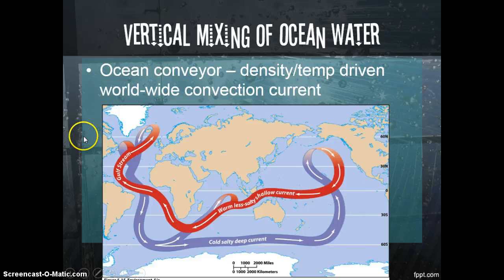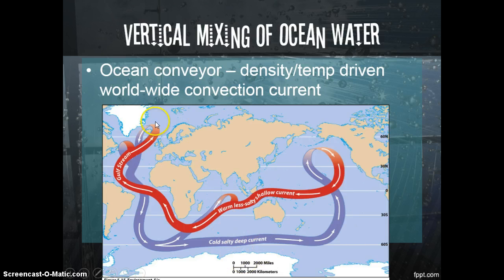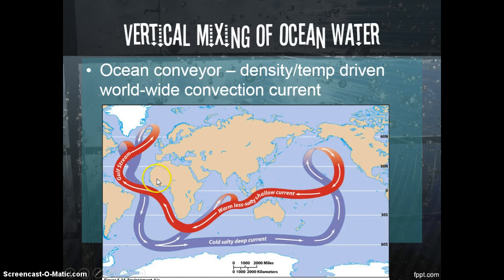We also have deeper currents caused by the vertical mixing of ocean water. Salt water is much more dense, and cold water is much more dense until about four degrees Celsius, at which point it starts to form ice, which floats. Cold, salty water sinks because of its density — this happens near the poles where the coldest water is. It sinks below the warm, less-salty water flowing off of land. This cold salty water sinking and warm less-salty water rising creates what we call the ocean conveyor, a deep ocean current driven by density and temperature differences that goes all around the world.